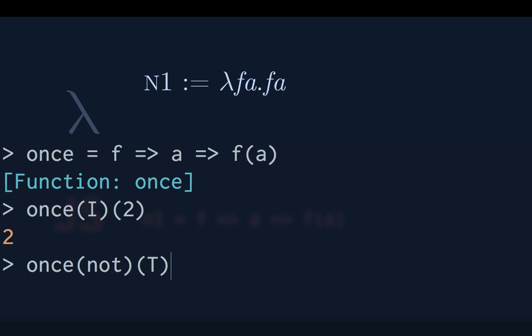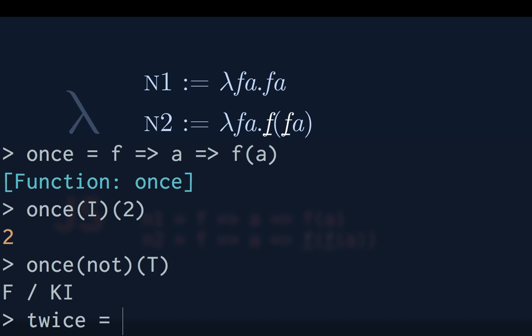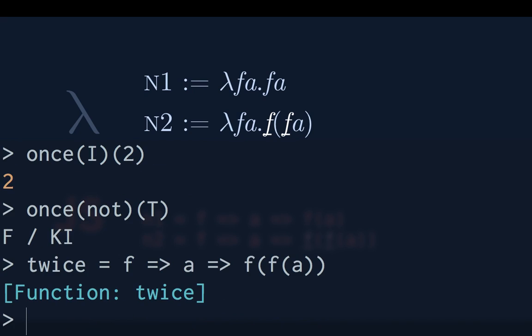On true? Yeah, straightforward. What about two? Two will take a function and argument and apply the function two times — it applies the function to the argument, then applies the function again to the result. So 'twice' takes a function and an argument and applies the function to the function of the argument. Twice not of false — a double negative — loops right back around.